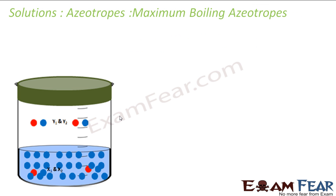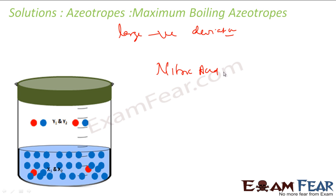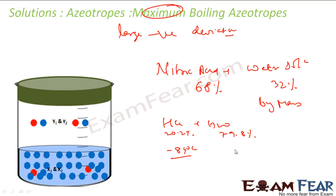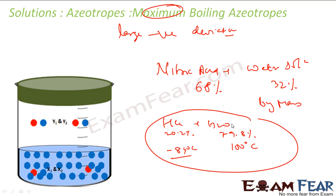Maximum boiling azeotropes show a large negative deviation from Raoult's Law. An example is nitric acid and water: nitric acid is 68% and water is 32% by mass. The boiling point of pure nitric acid is approximately -84 degrees Celsius and the boiling point of water is 100 degrees Celsius, but the boiling point of this mixture is 110 degrees Celsius — higher than either component.